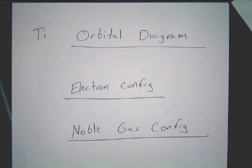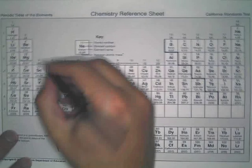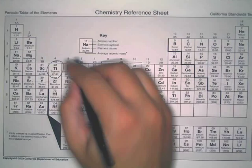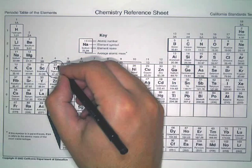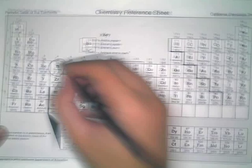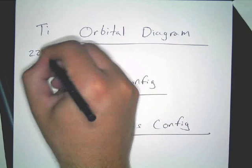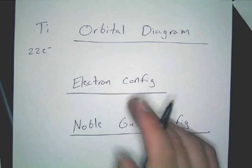So, titanium. Now, you notice titanium is in the D-block. That's why we're doing this one now. So, what is the... 22. Yeah, 22, the atomic number. So, we got 22 electrons.